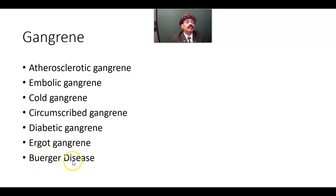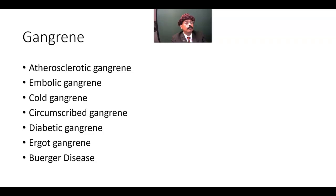Buerger's disease is a condition in smokers, especially in certain parts of the world, particularly in Southeast Asia, and in barefooted people. They may have this type of gangrene especially involving the toes, and sometimes the fingers. There may be amputation — either auto-amputation or managed surgical amputation.